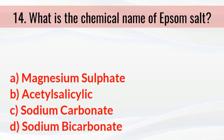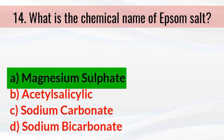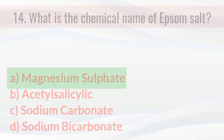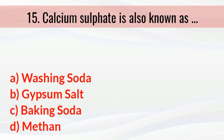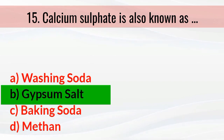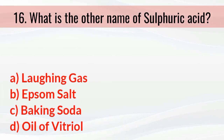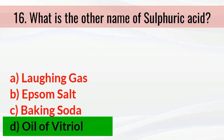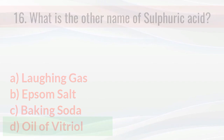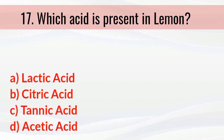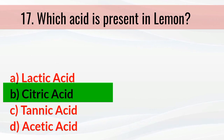What is the chemical name of Epsom salt? The right answer is magnesium sulfate. Calcium sulfate is also known as? The right answer is gypsum. What is the other name of sulfuric acid? The right answer is oil of vitriol. Which acid is present in lemon? The right answer is citric acid.